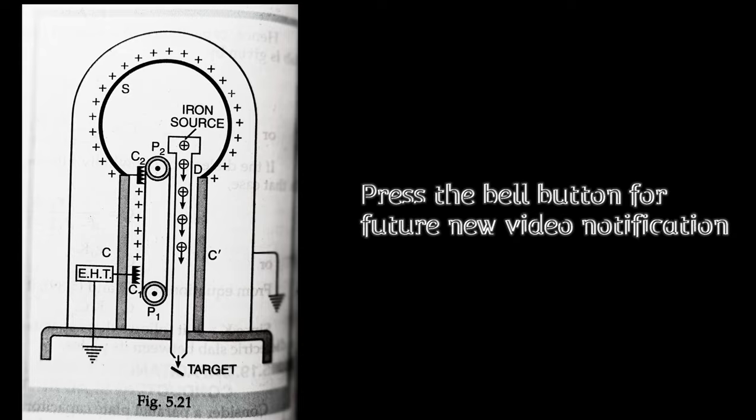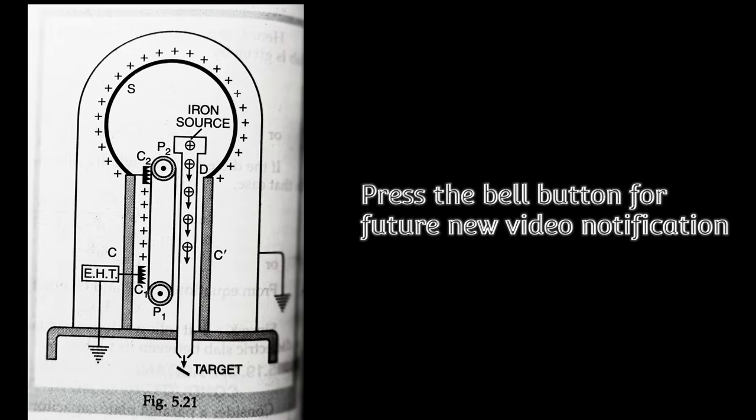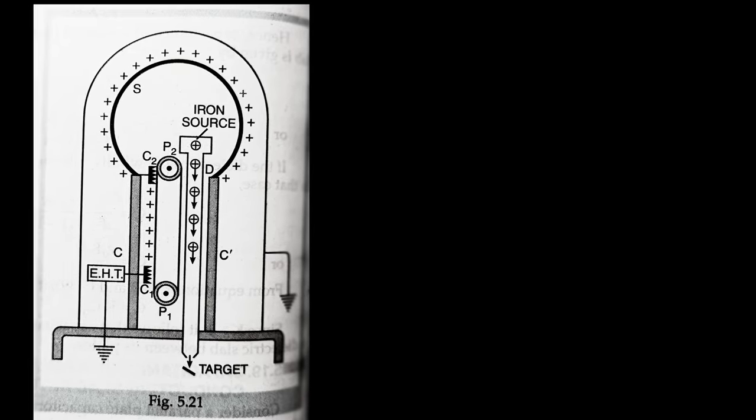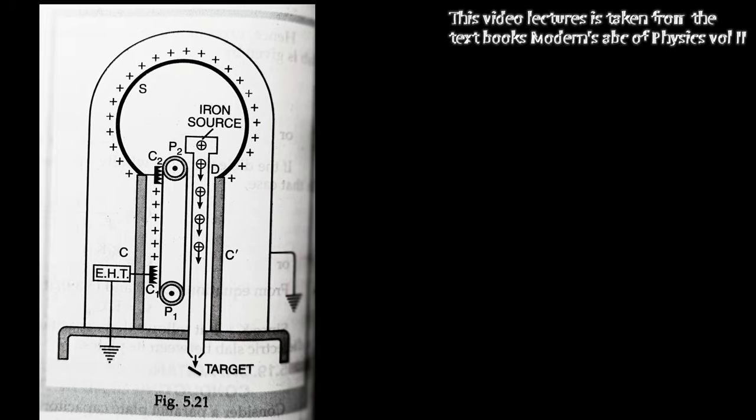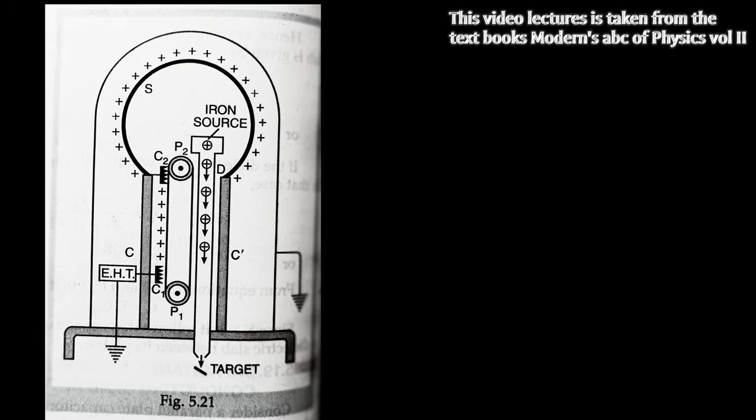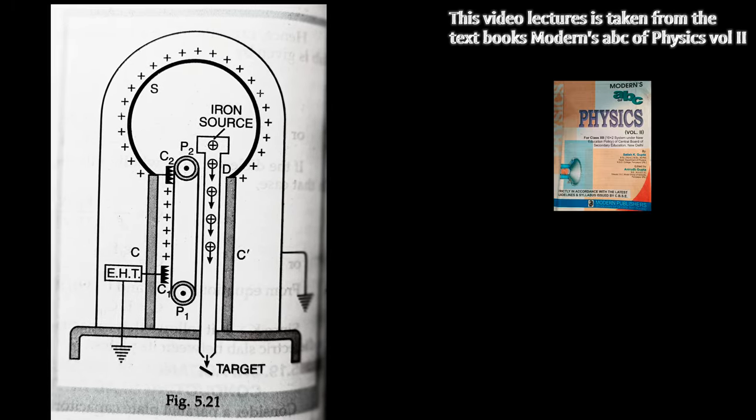Construction and working. The Van de Graaff generator consists of a large hollow metallic sphere S mounted on two insulating columns CC, as shown in Figure 5.21.